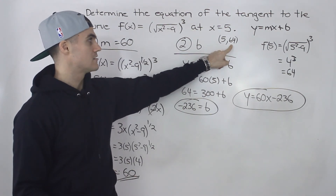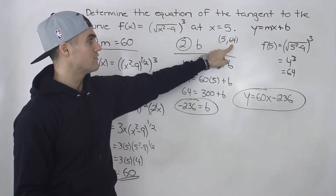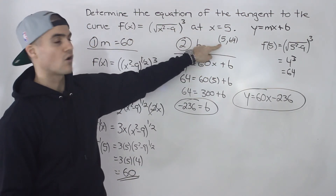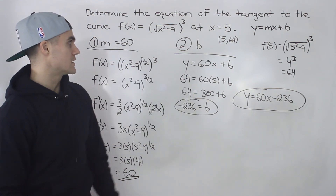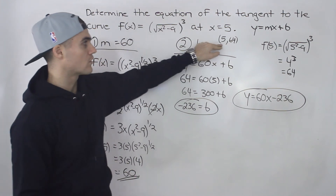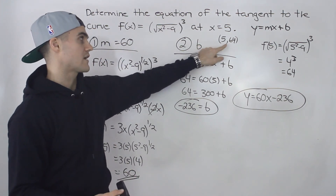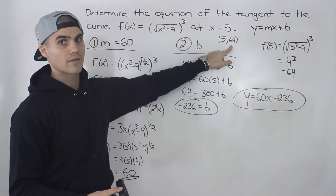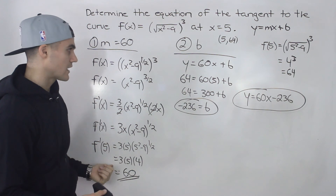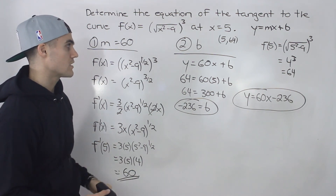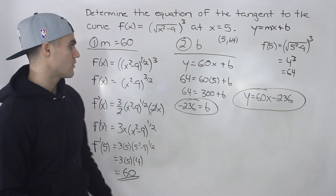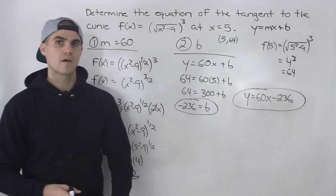They can also give you the y value, which I haven't seen as often. In that case, you'd set the function equal to that y value and solve for the x value first, since you need to plug x into the derivative to find the slope. But usually they give you either the x value or the full coordinate. Either way, follow these steps — that is your final answer.